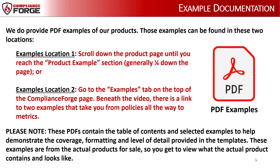We do provide PDF examples of all of our products. You can view examples by scrolling down about one-quarter of the way down each product page to the Product Examples section. You can also find examples by clicking on the Examples page in the menu bar near the top of the Compliance Forge website. These samples include a complete table of contents to demonstrate coverage, formatting, and level of detail. The example content provides the best way for us to demonstrate coverage and content, and is taken from the actual products for sale.